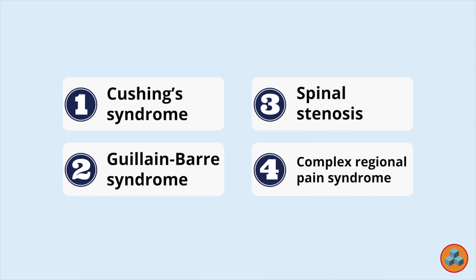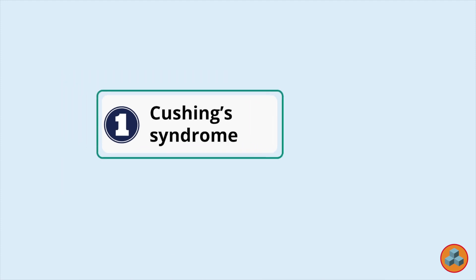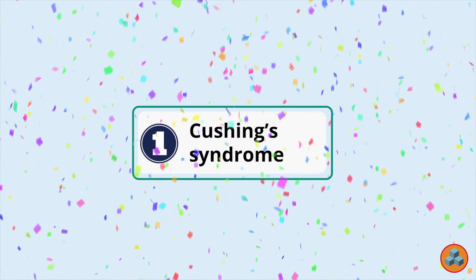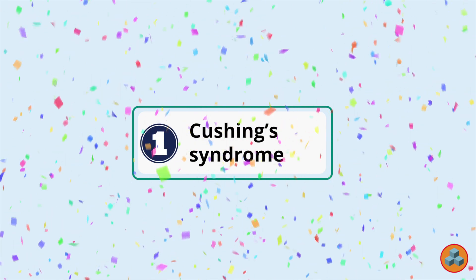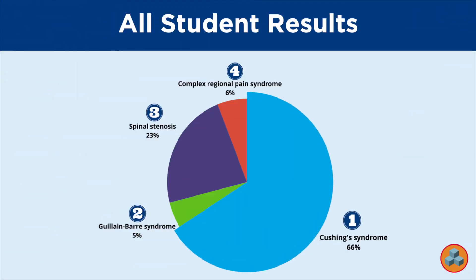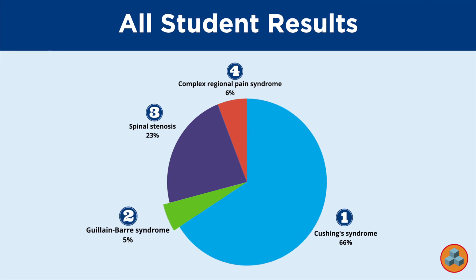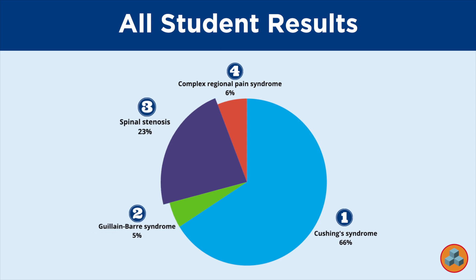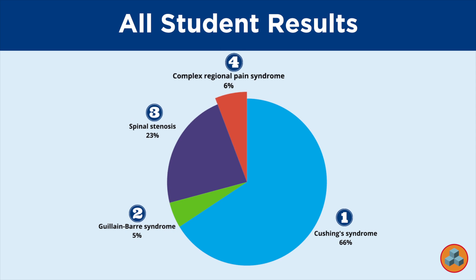The correct answer is Option 1. Let's explore the all-student data. 66% of students selected Option 1, Cushing syndrome, the correct response. 5% of students selected Option 2, Guillain-Barré syndrome. 23% of students selected Option 3, spinal stenosis. 6% of students selected Option 4, complex regional pain syndrome.